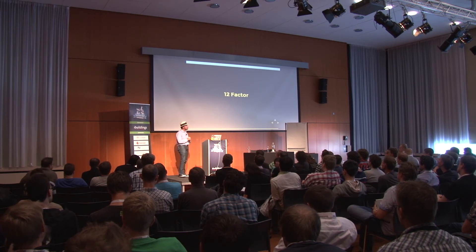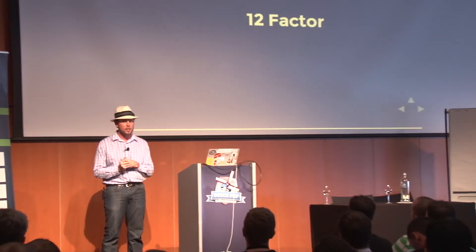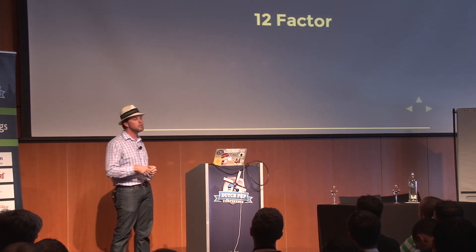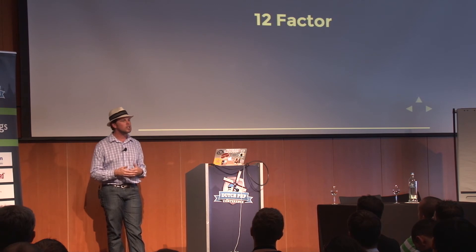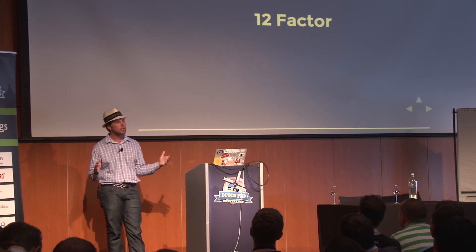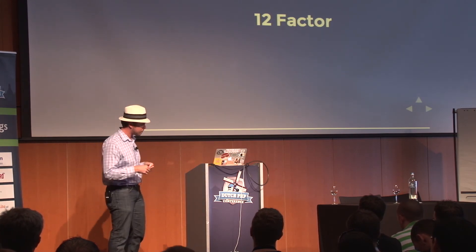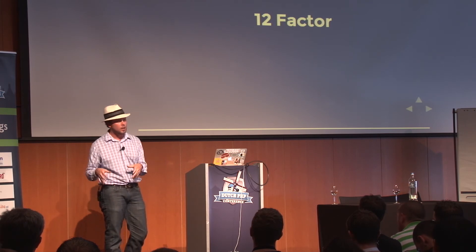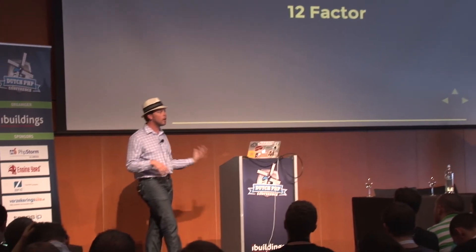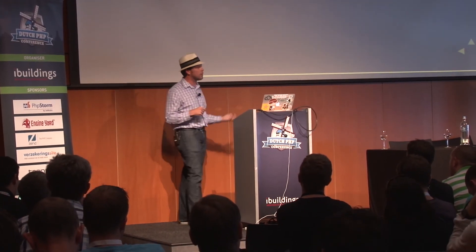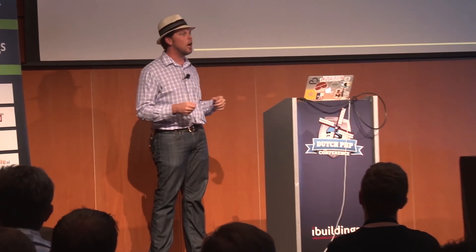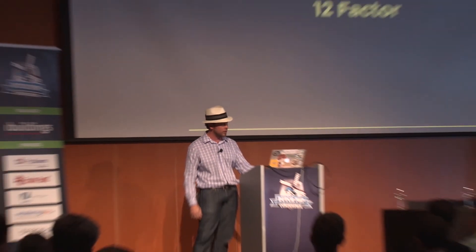There's one thing I want to call out for further reading: there's a site called 12factor.net, written by the guys at Heroku. If you haven't read it, it takes about 30 minutes to an hour to go through — it's 12 different steps or factors in what they say is a well-factored application meant to run on the cloud. The same principles apply when dealing with service-oriented architecture, whether you're running on Heroku, spinning up your own cloud cluster on Rackspace or Amazon, or using your own hardware. If you follow that, you'll end up with code that works really well with service-oriented architecture.